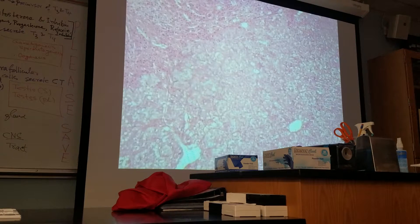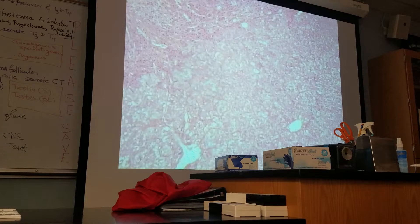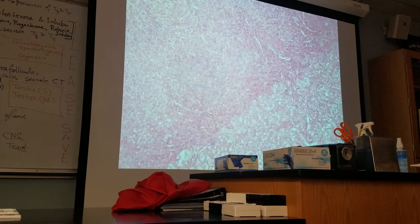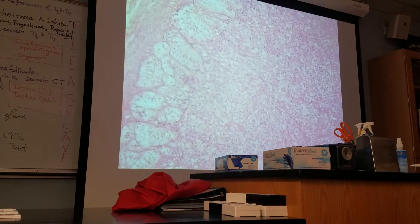Zona reticularis — you can distinguish and differentiate it. You can see spaces; it looks like a network, and that's why the name zona reticularis. Here is zona fasciculata — the cells are very compact, cohorts of cells forming fasciculata. And look at the unique zona glomerulosa — very unique.